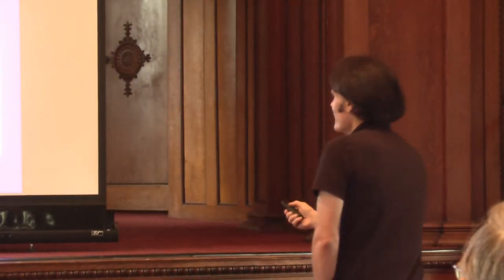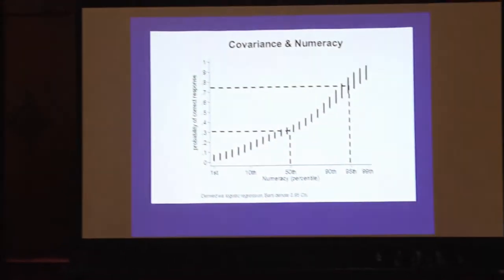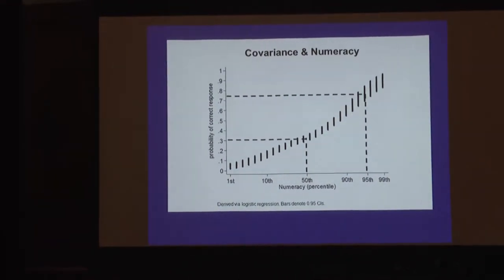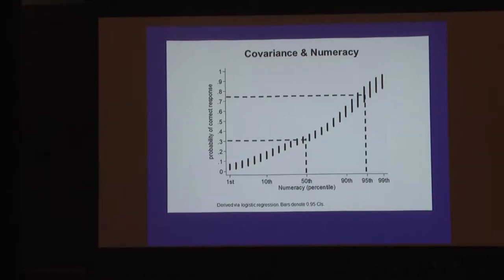It's even worse than 50% — people do worse than guessing because the wrong answer looks like the right answer unless you really know what you're doing. They're not guessing; they're just getting the wrong answer. You have to be at the 95th percentile of numeracy before you even have a 75% chance of getting it right. So it's a pretty hard test.